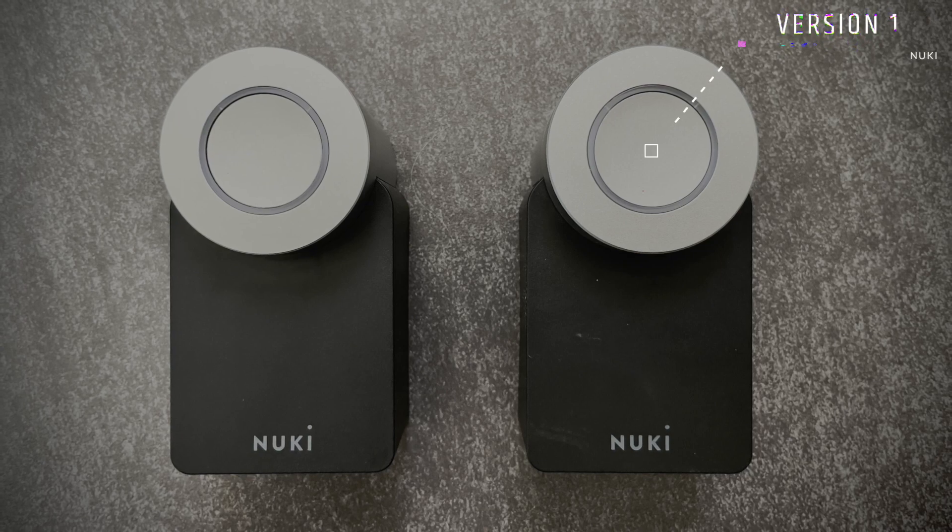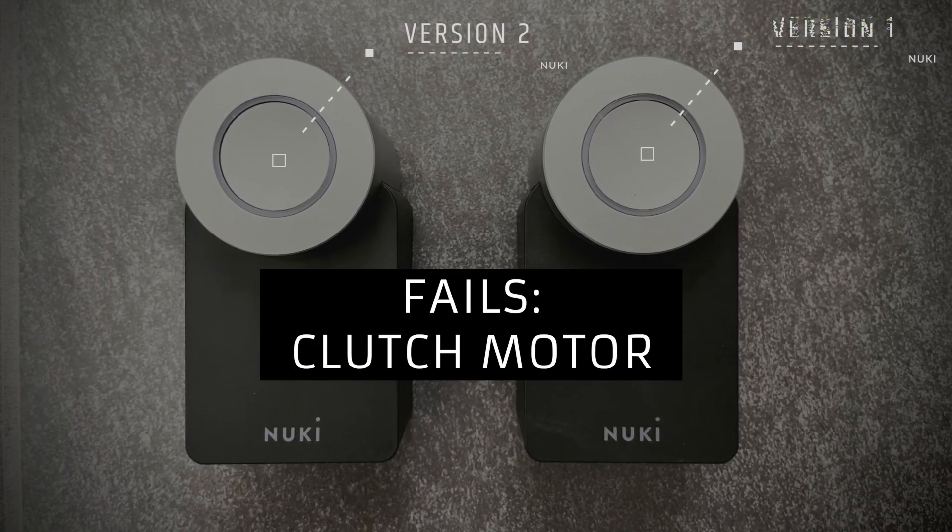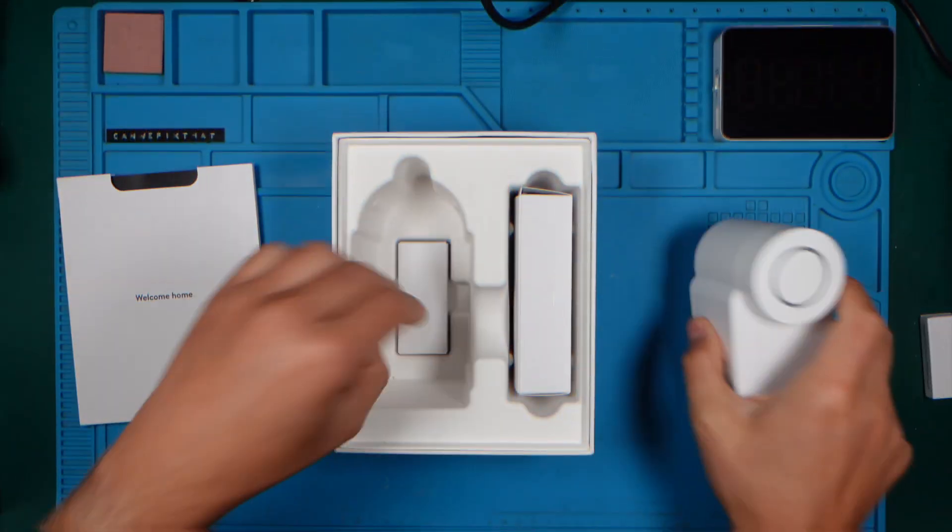In the previous generation version 1 and 2, the motor inside fails often. When this happens the knob is hard to turn because the latch mechanism won't work properly. I've done a video about this in the past.